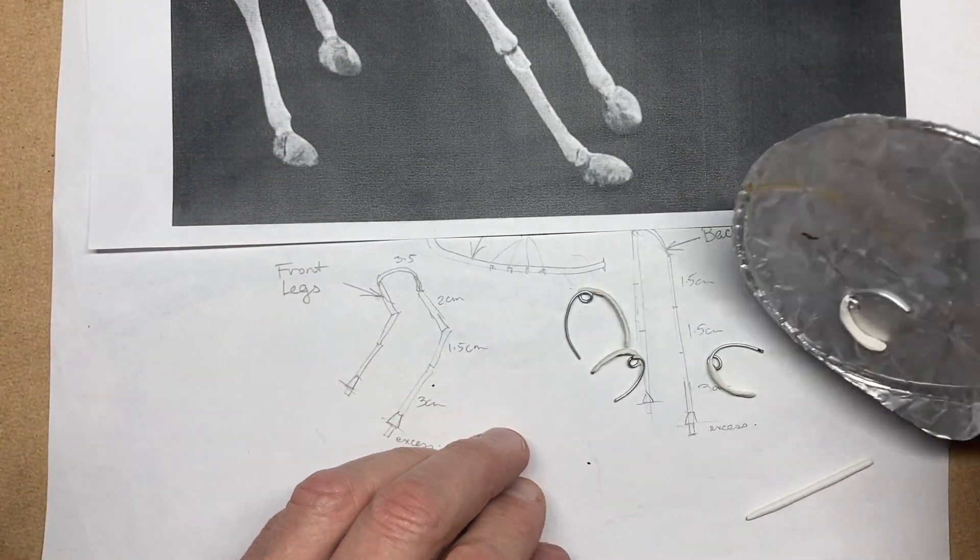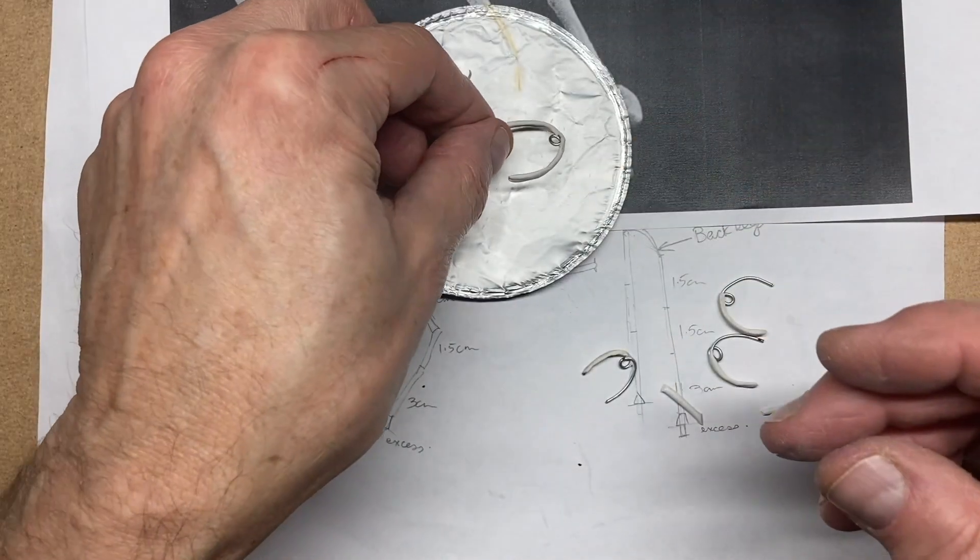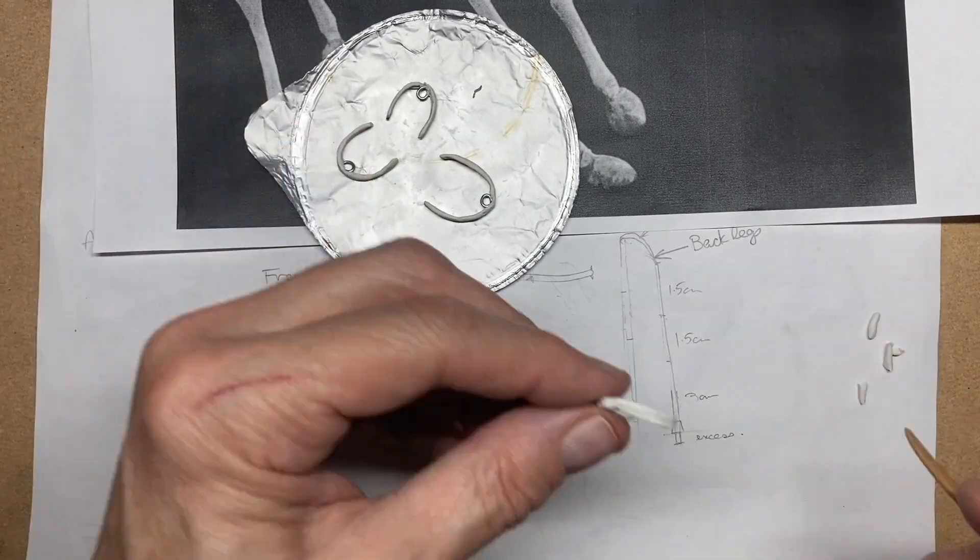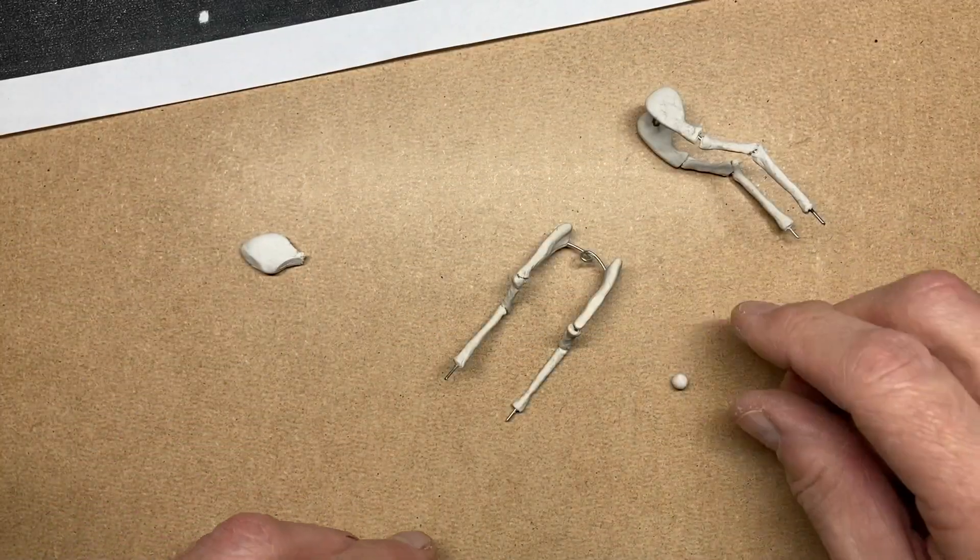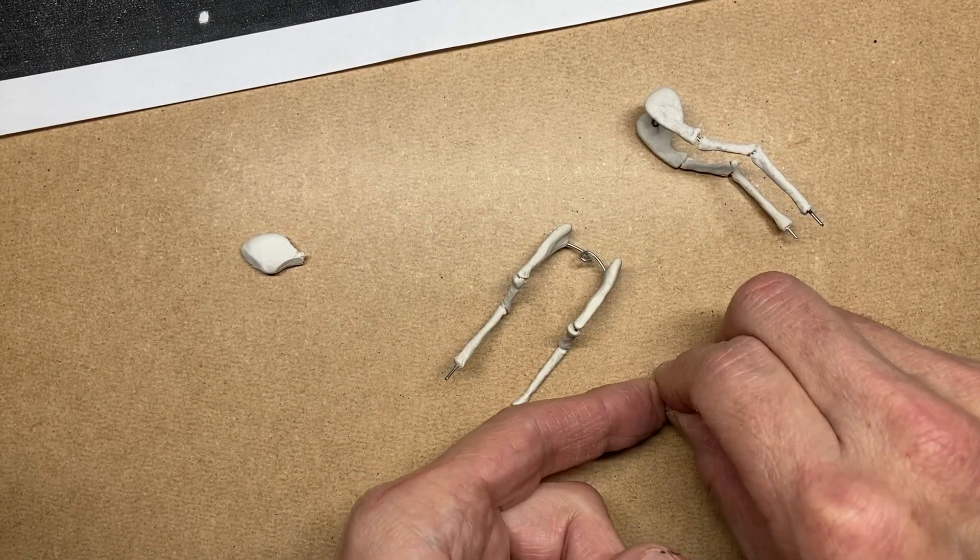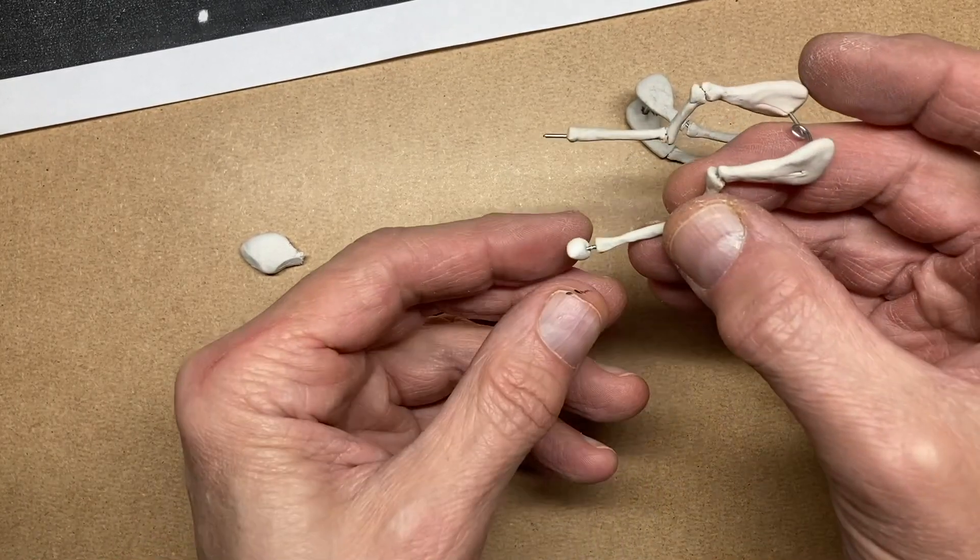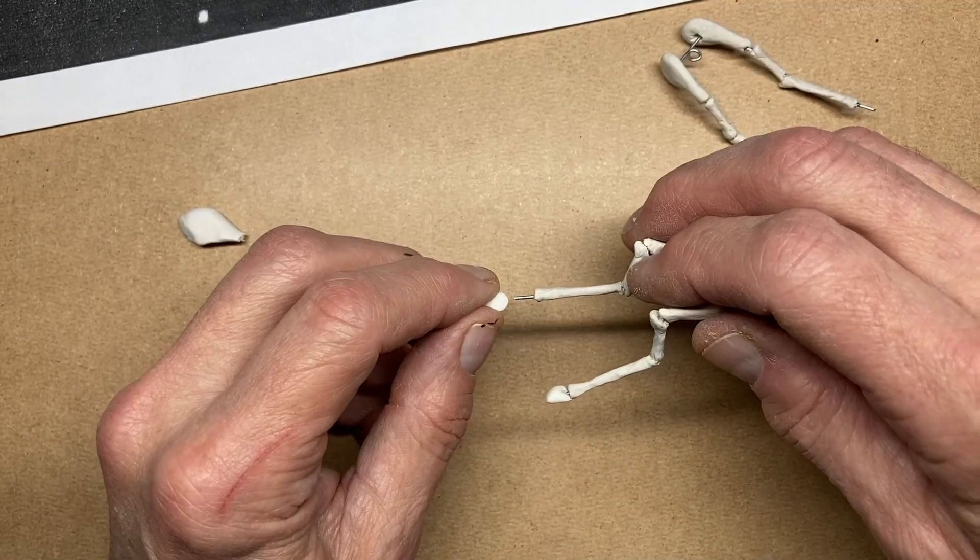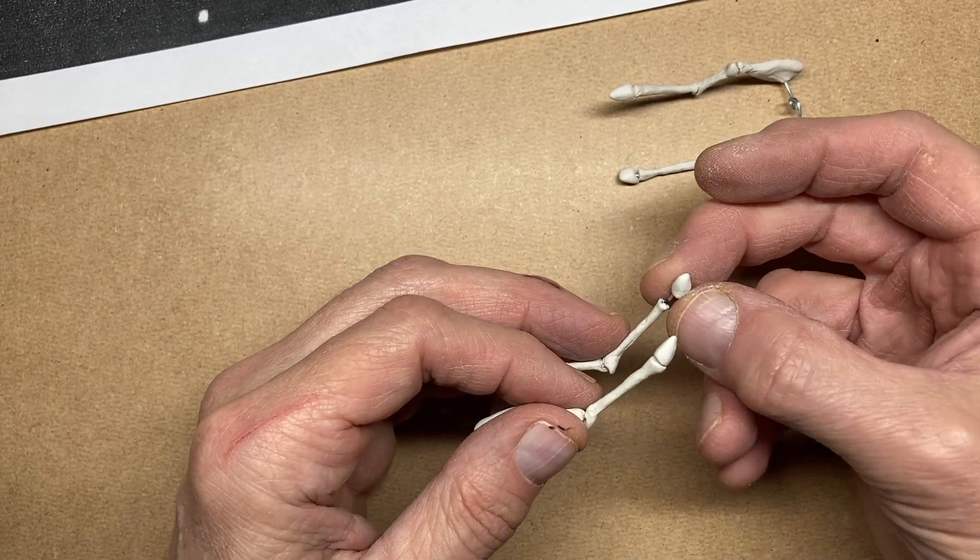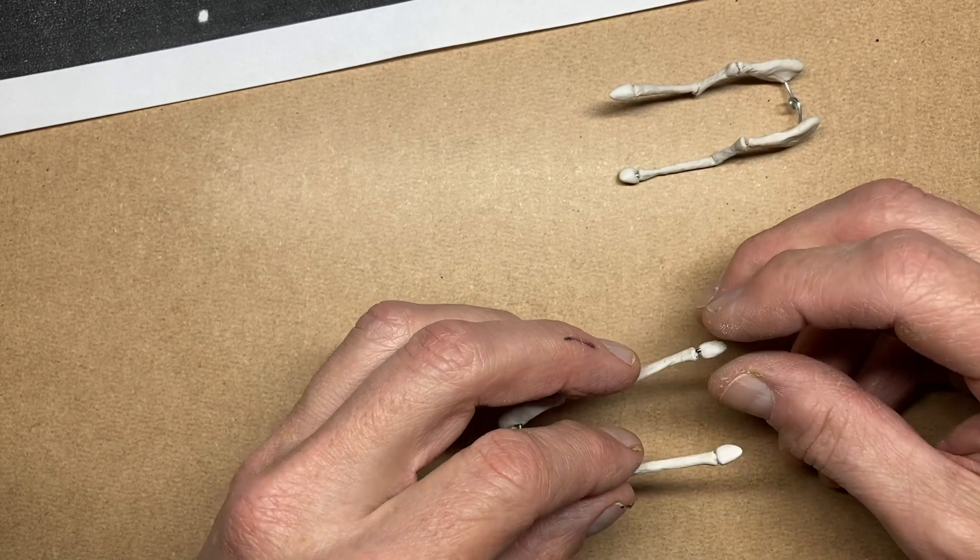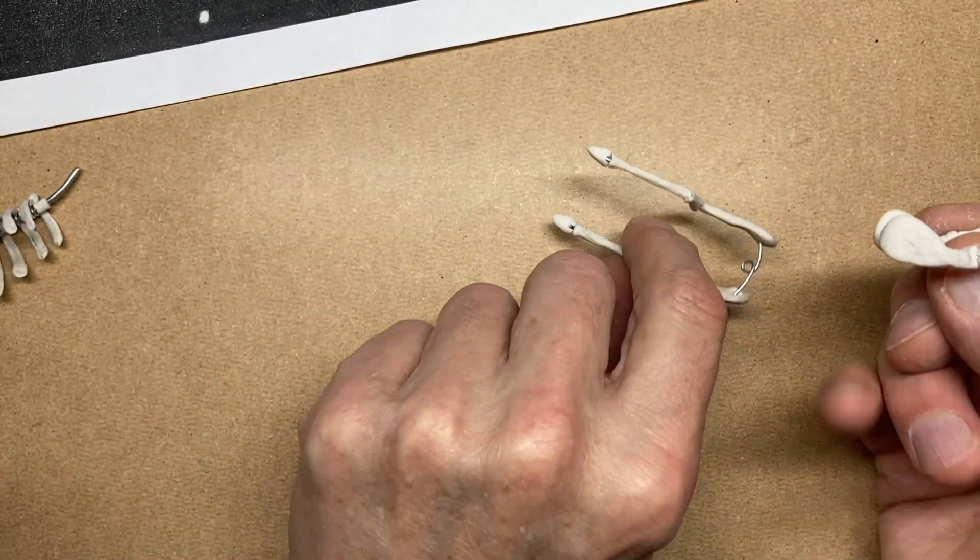And here they are fresh from the oven and ready to have the second side put on. One, two, three, four. I need to do the hooves for the feet. Let's go. Let's get a little bit more of the Sculpey. So I have one hoof and then another hoof. There we go. Hooves for reindeer.